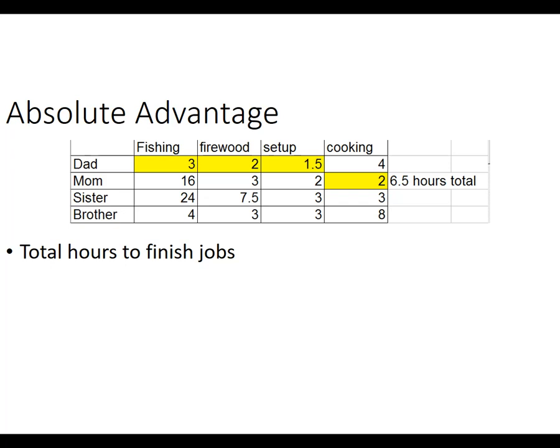Absolute advantage again is whoever is most productive. The dad has an absolute advantage when it comes to fishing, firewood, and setting up camp. The mom can do the cooking. There are a couple of problems with letting whoever is most productive do all the production. Problem number one is it takes a long time, because the dad can't be fishing, getting firewood, and setting up camp at the same time. Another problem is what are the brother and sister doing during this time? They're not using their labor at all — they're just sitting there.